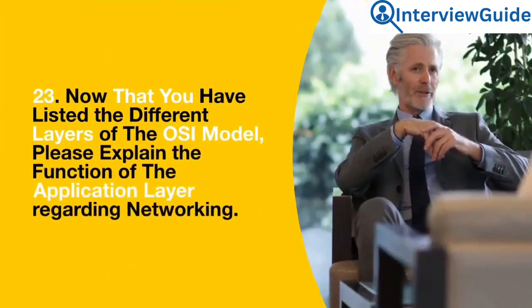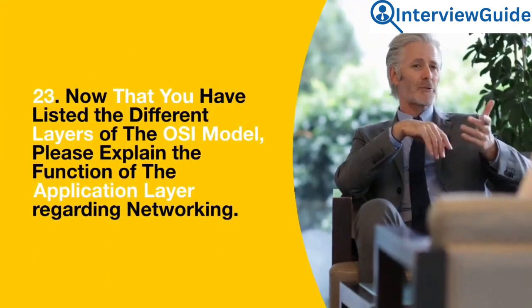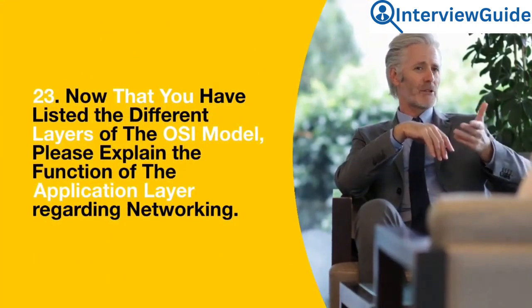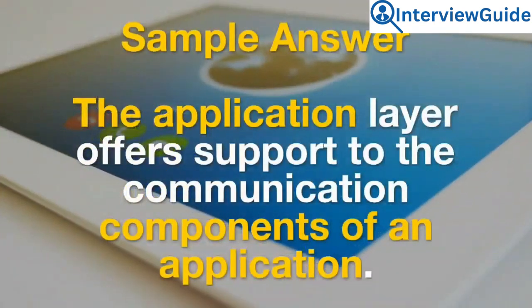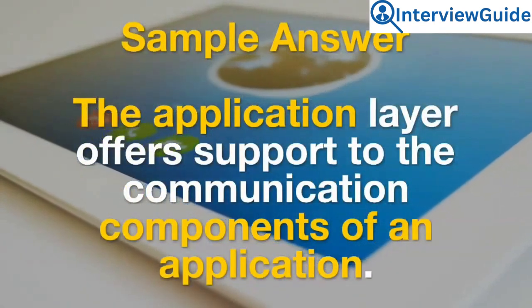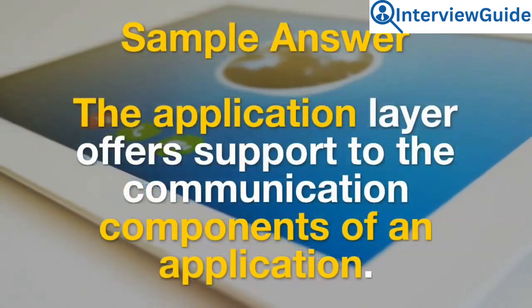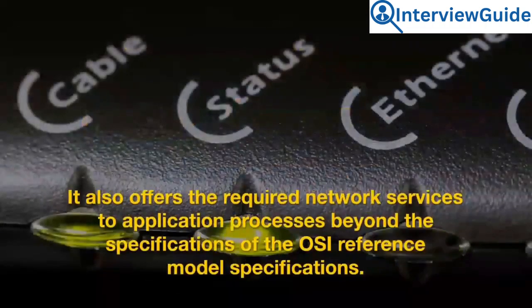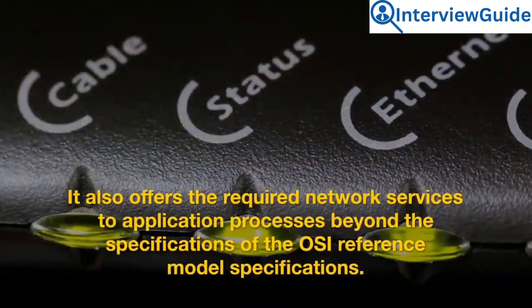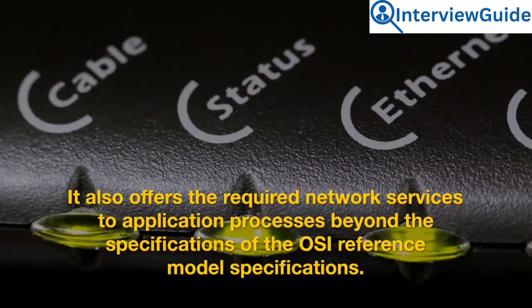Question 23: Now that you have listed the different layers of the OSI model, please explain the function of the application layer regarding networking. The application layer offers support to the communication components of an application. It also offers the required network services to application processes beyond the specifications of the OSI reference model.